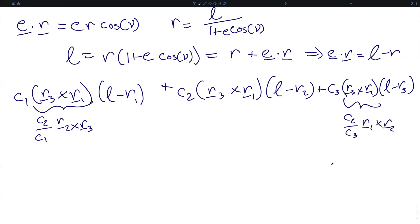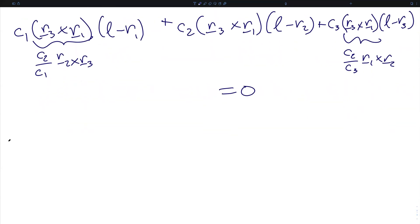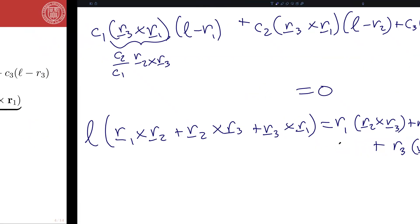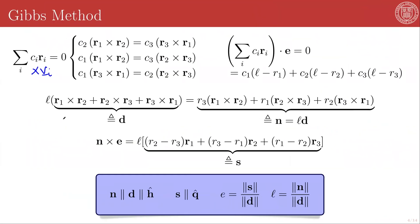Recall that this entire expression is equal to zero. So writing this all out and simplifying, we have simply grouped all of the terms in the semi-latus rectum to one side, and all of the terms in the individual orbital radius magnitudes on the other side.